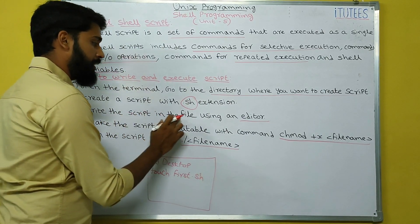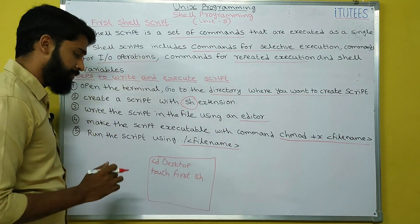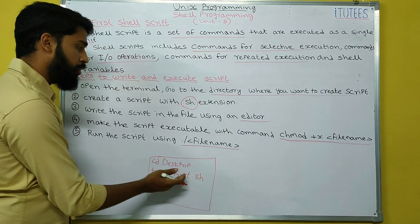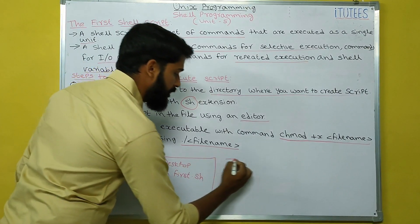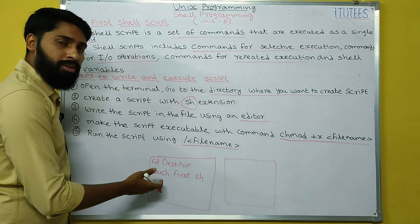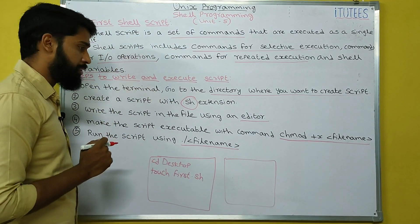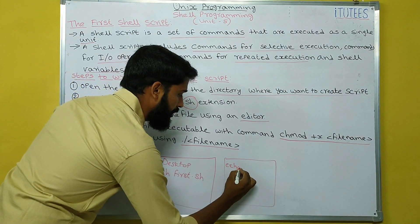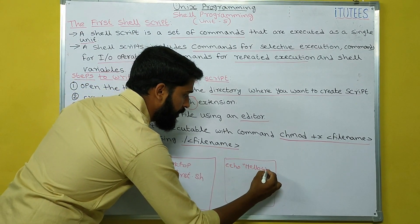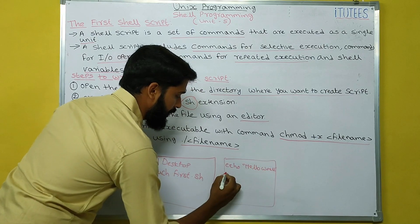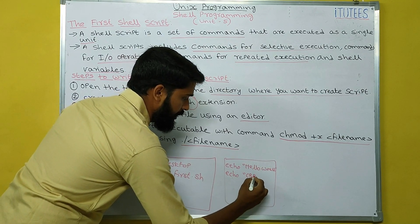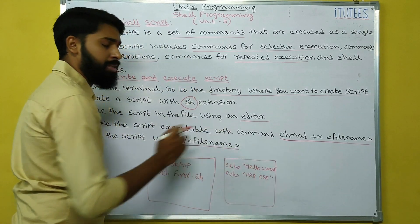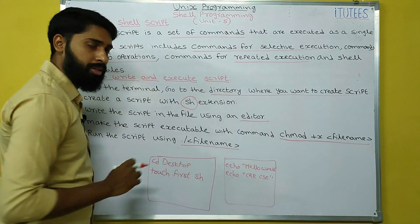Third step: write the script in the file using an editor. You move to the desktop where the file first.sh has been created. You can open that file — it is an editor. You can also open this file with the vi editor. In this file you are going to write the program. For example, I want to print echo hello world, and on the second line echo CRR CS. Now I save this file using the save button.